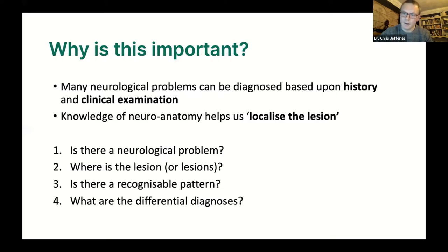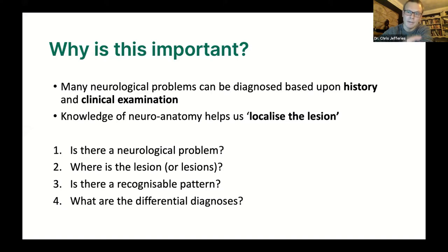We're not going to spend much time on neuroanatomy and localizing lesions, because it gets very complicated quickly. But there's one thing I'd like to spend a couple of minutes on — both because it's useful in clinical practice and because it crops up in OSCEs — and that is the difference between an upper motor neuron lesion and a lower motor neuron lesion, also called upper and lower motor neuron syndromes. These have different clinical signs.